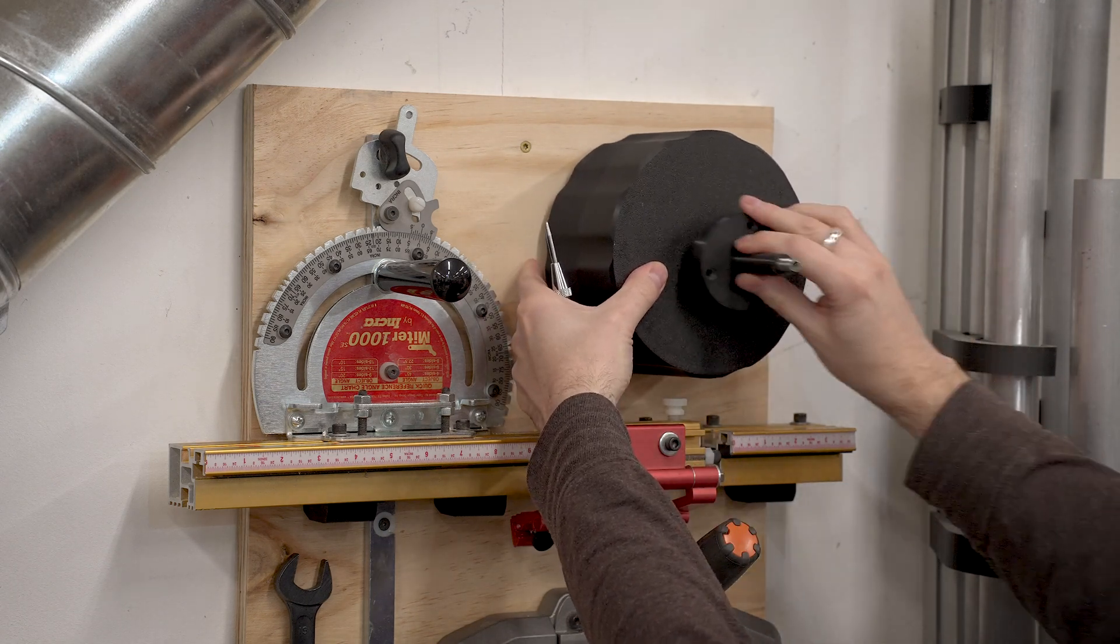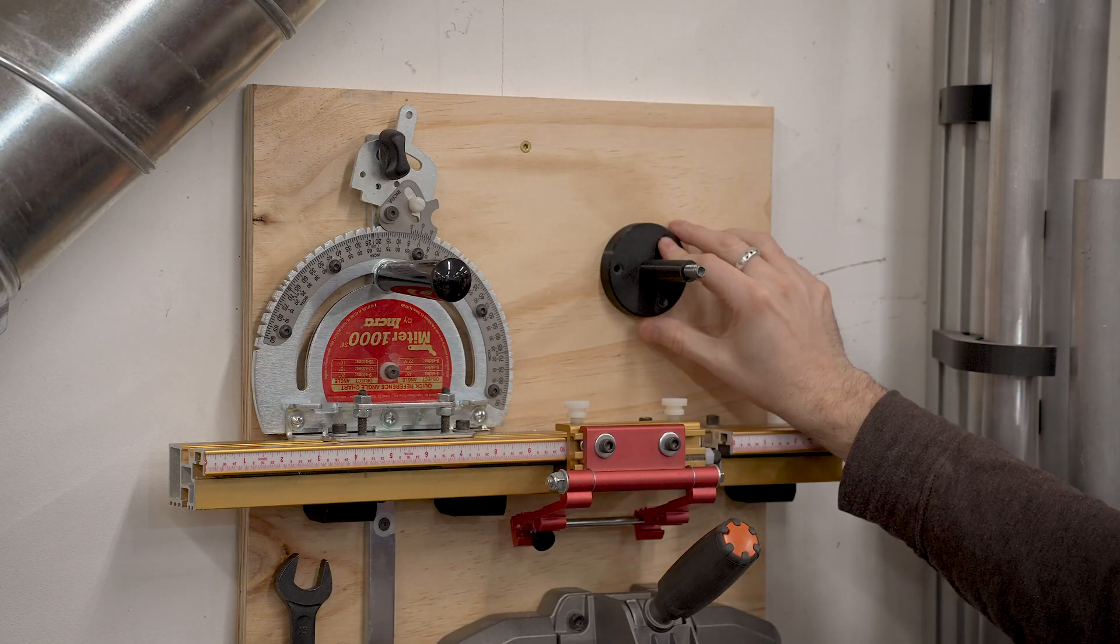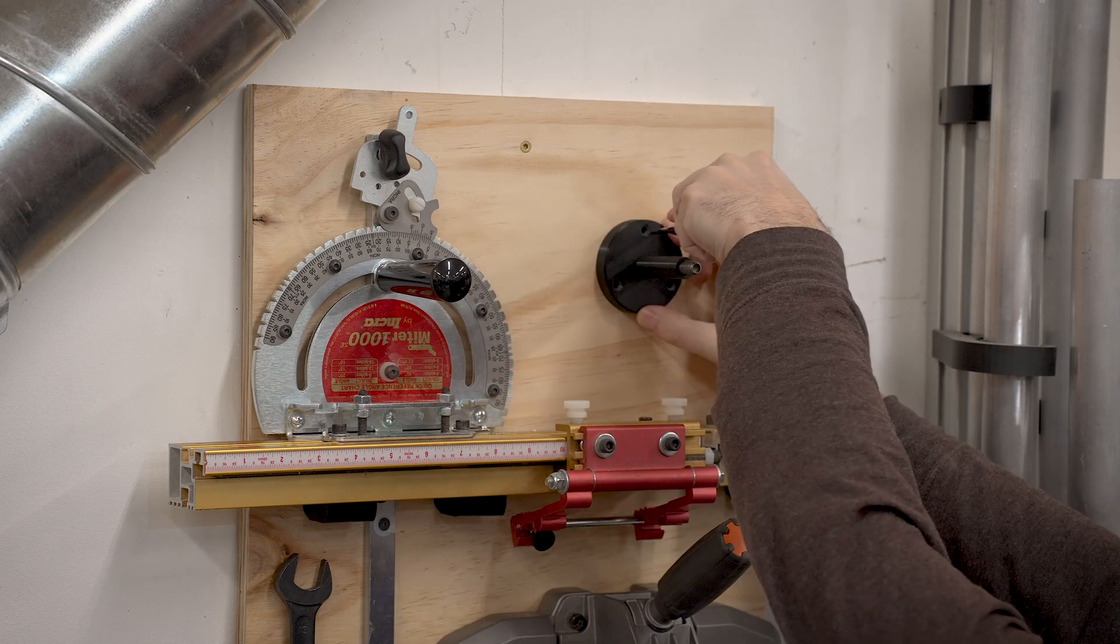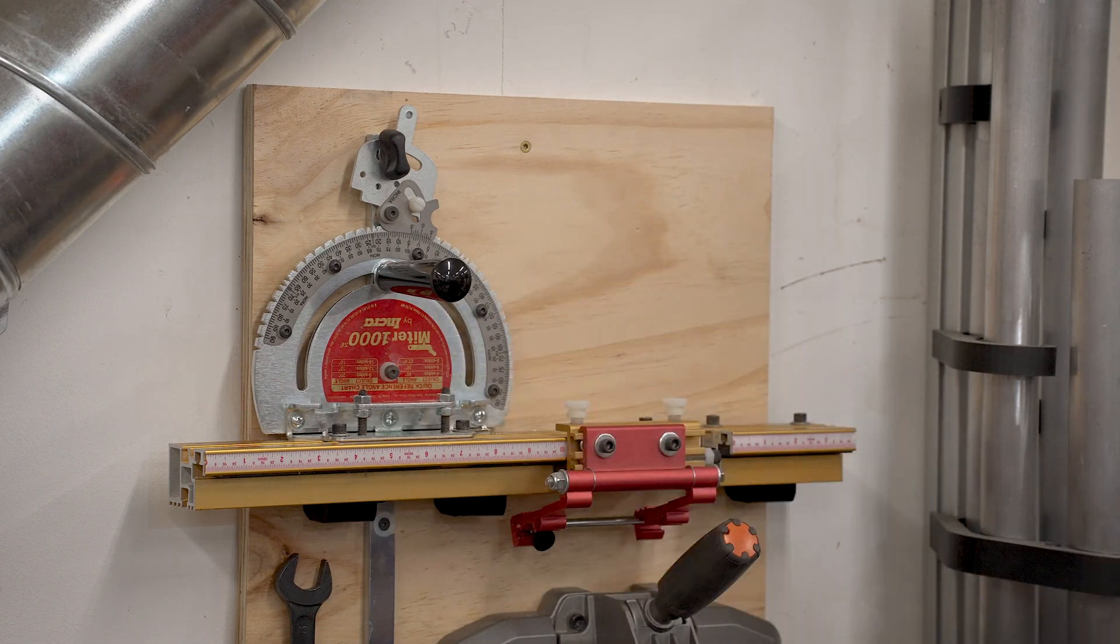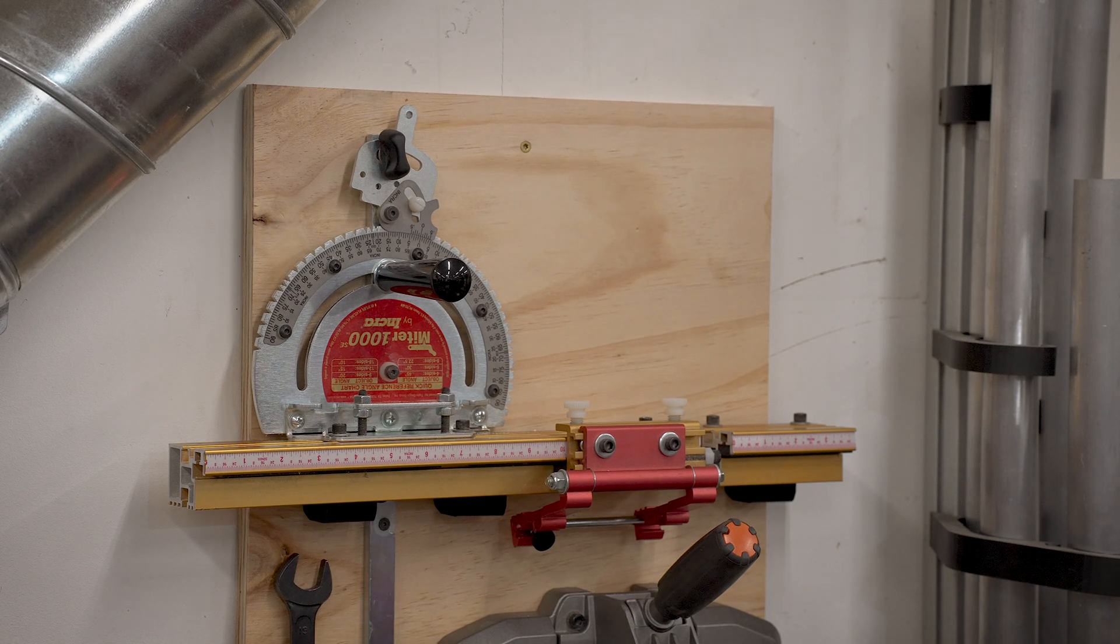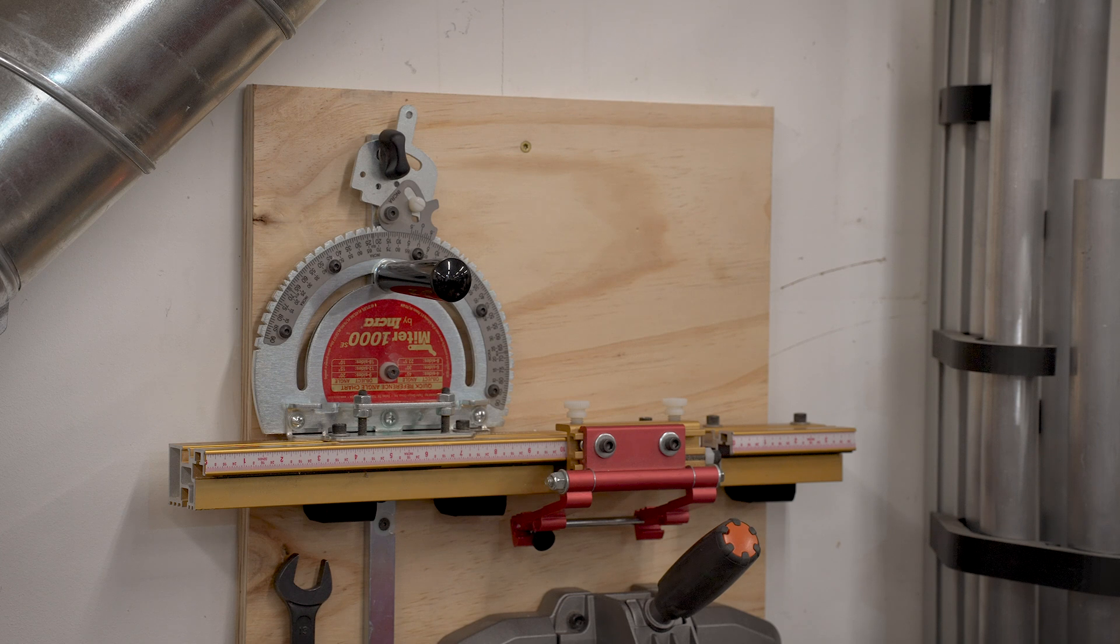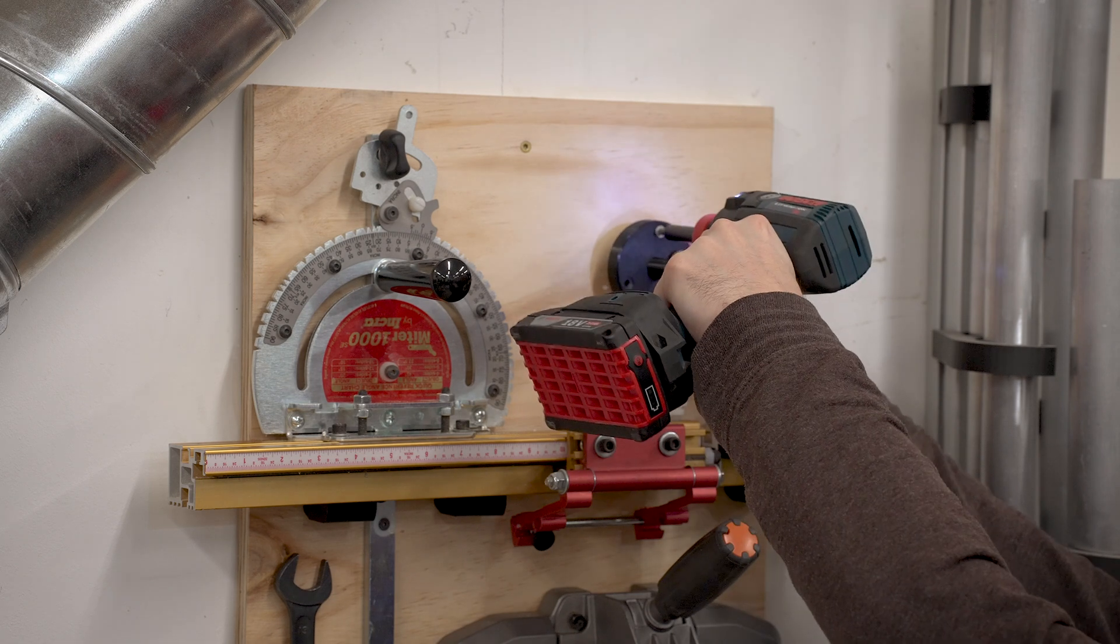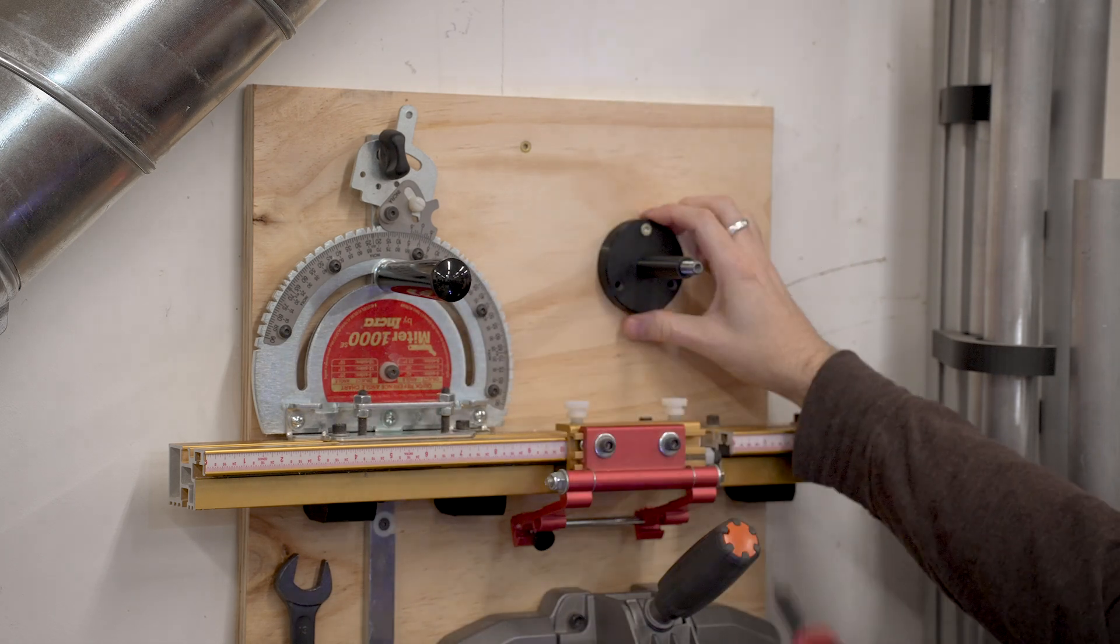It attaches to the back board with these number eight one and a quarter inch construction screws that just go straight in. Everything else on there has the same screws and realistically this print is probably going to be stronger than the screws. Maybe the layers will separate and it'll pull out. I could probably do a pull up off this thing. It'll be perfectly fine. Don't worry about it.